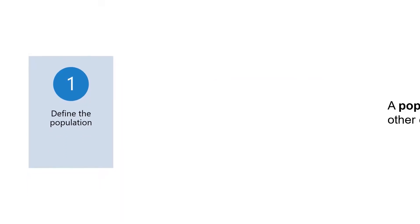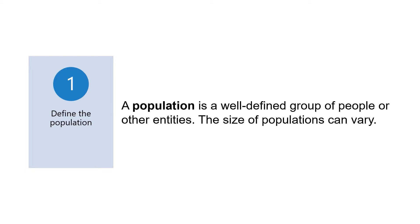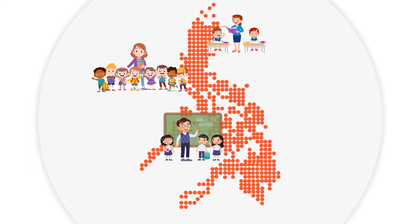The first step is to define the population. A population is a well-defined group of people or other entities, and the size of populations can vary. Researchers might like to obtain data about all students in the Philippines, but time and resources may cause them to limit a study to a more accessible population, such as the students in one community like Davao City. They must recognize that findings from a randomly selected sample in Davao City can be generalized to all students in that city, but not all students in the Philippines.